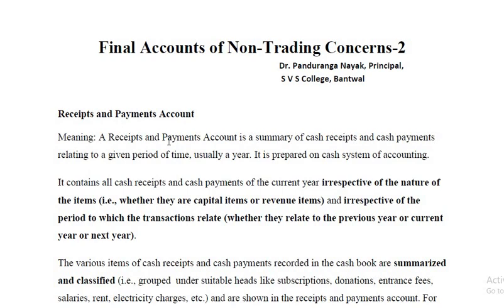We'll begin with the receipts and payments account. Receipts and payments account is a summary of cash receipts and cash payments relating to a given period of time, usually a year. It is prepared on cash system of accounting. A non-trading concern maintains a cash book, and in the cash book, cash transactions are recorded in the order of dates. At the end of the year, a summary of cash receipts and cash payments is prepared, and that is the receipts and payments account. It has two sides: the receipts side and the payments side.